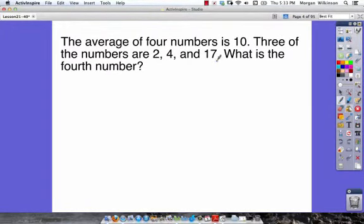The average of 4 numbers is 10. 3 of the numbers are 2, 4, and 17. What is the fourth number? Well, in this we're given the average. The average is equal to 10. So 10 is going to be equal to the sum of the numbers divided by the number of numbers. We know there's 4 numbers here. 3 of the numbers are 2, 4, and 17. But we don't know what the fourth number is equal to. We'll call that x. Let's circle the x so that we remember that that's what we're trying to solve for.